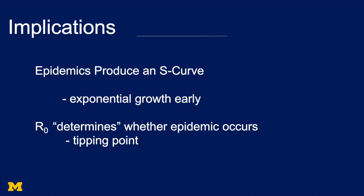Second, R0, the basic reproduction number, determines whether an epidemic occurs. It's a tipping point. Now, I have determines in quotes, and the reason why is because we are partly in control of what R0 is. R0 is a function of the virus, and it's a function of our actions.